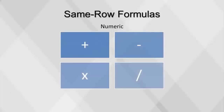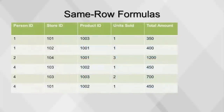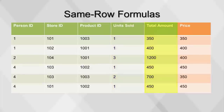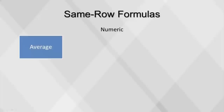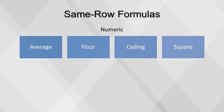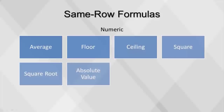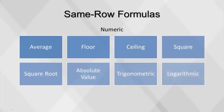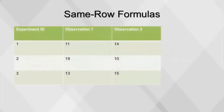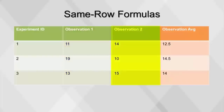Formulas can be used for adding, subtracting, multiplying, or dividing two numeric fields. In this table, we apply a formula to create the price column, which was calculated by dividing units sold by total amount. Formulas can also be used when applying a mathematical function to a numeric field. Examples of mathematical functions are average, floor, ceiling, square, square root, absolute value, trigonometric functions, and logarithmic functions. In this table, we will create an observation average column using the average formula, which averaged values from the observation 1 and observation 2 columns.